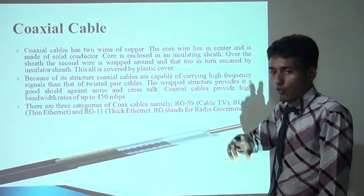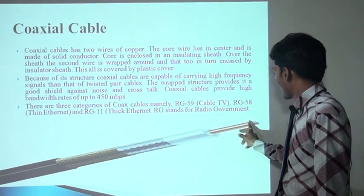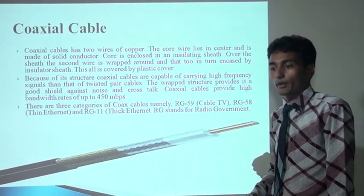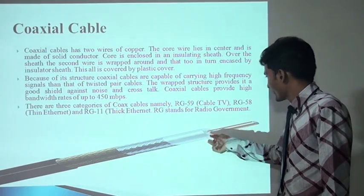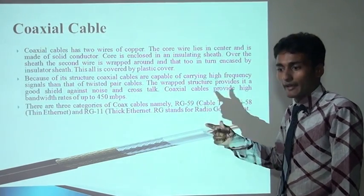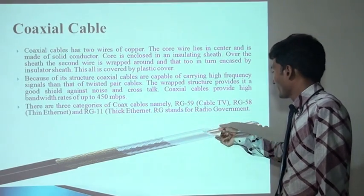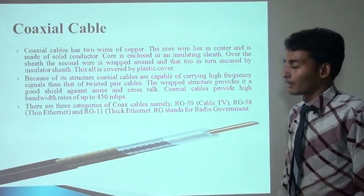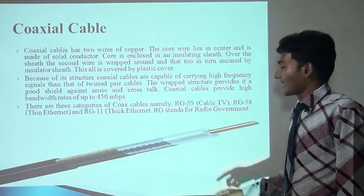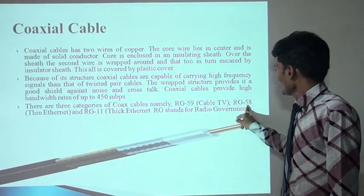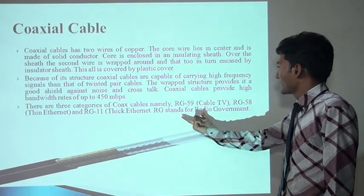The next one is coaxial cable. Coaxial cable has two wires. In the figure, one is a copper wire and the second is another conductor. In a coaxial cable, the main wire lies in the center — it is made of pure copper or a solid conductor used for transmitting high-speed data. Over this, another wire is wrapped around it like a rope. This is sealed by a plastic cover, a black plastic cover. There are various types of coaxial cable used in home applications, like RG59. RG means radio governance. RG59 is used for cable TV. RG58 thin ethernet is used in networking. RG11 is a thicker cable.